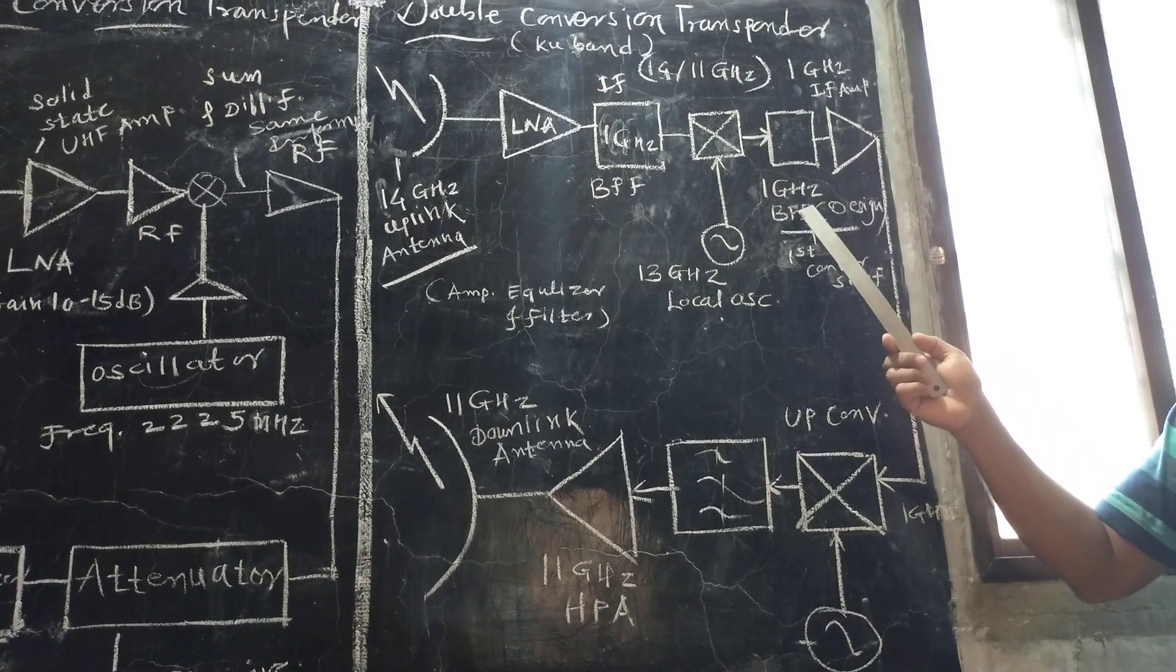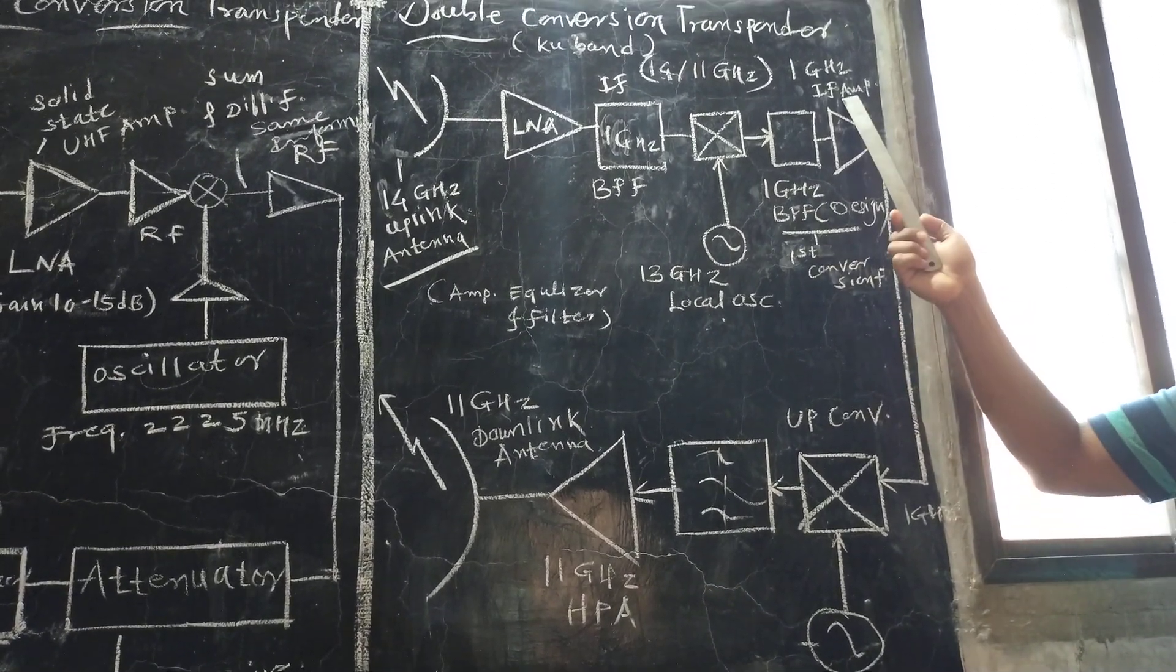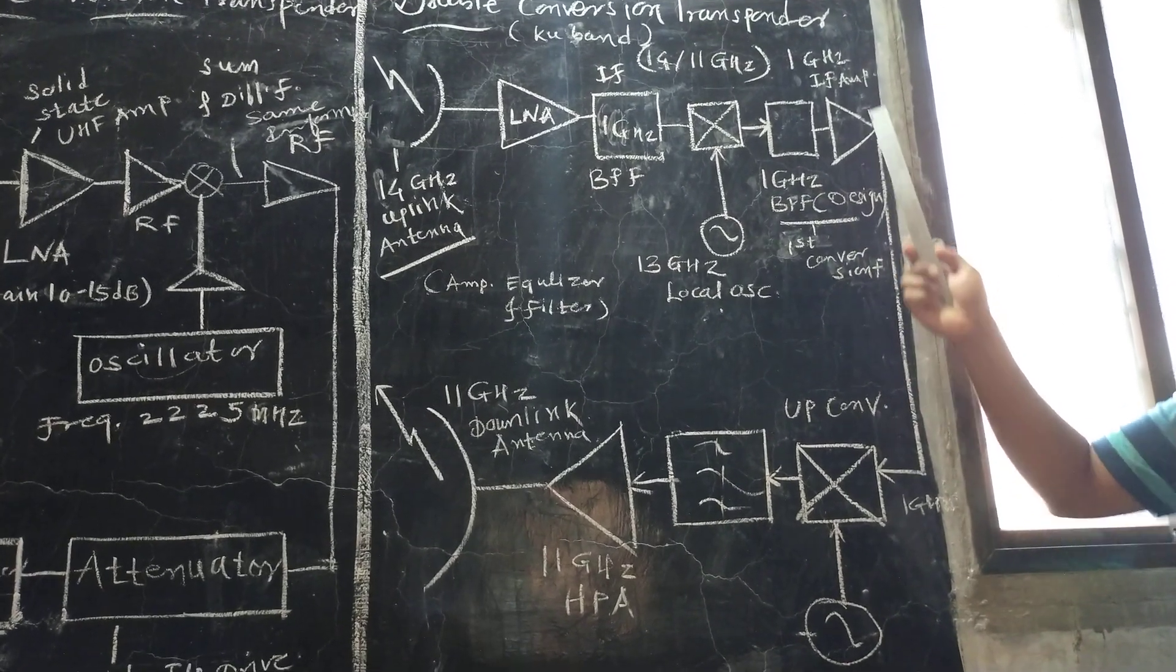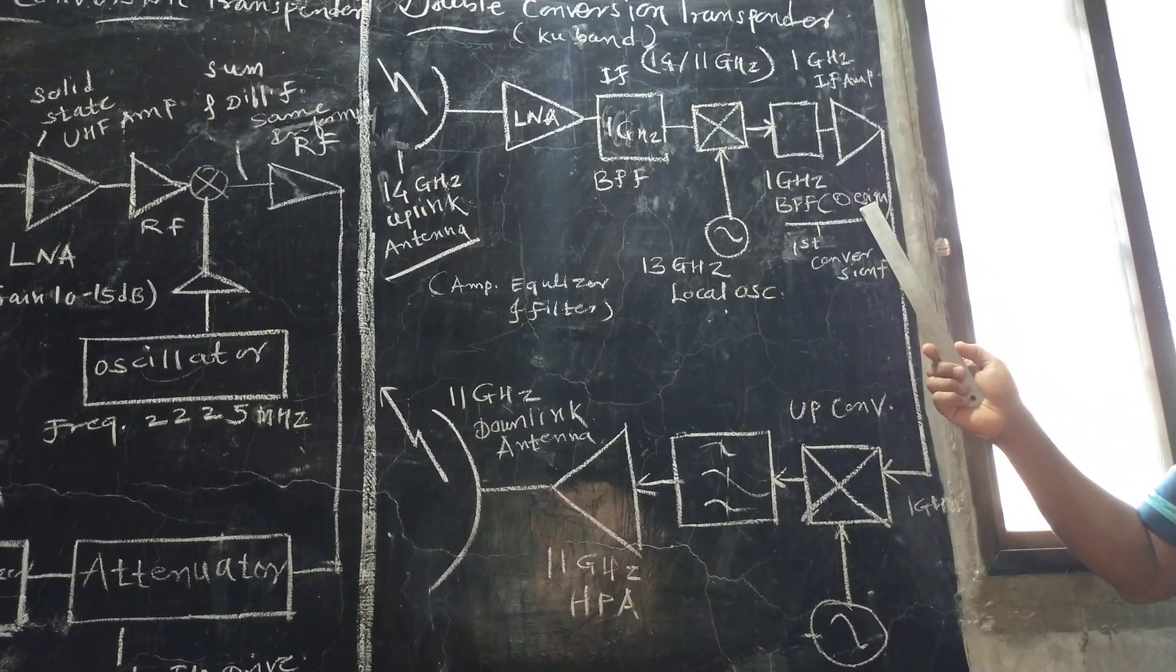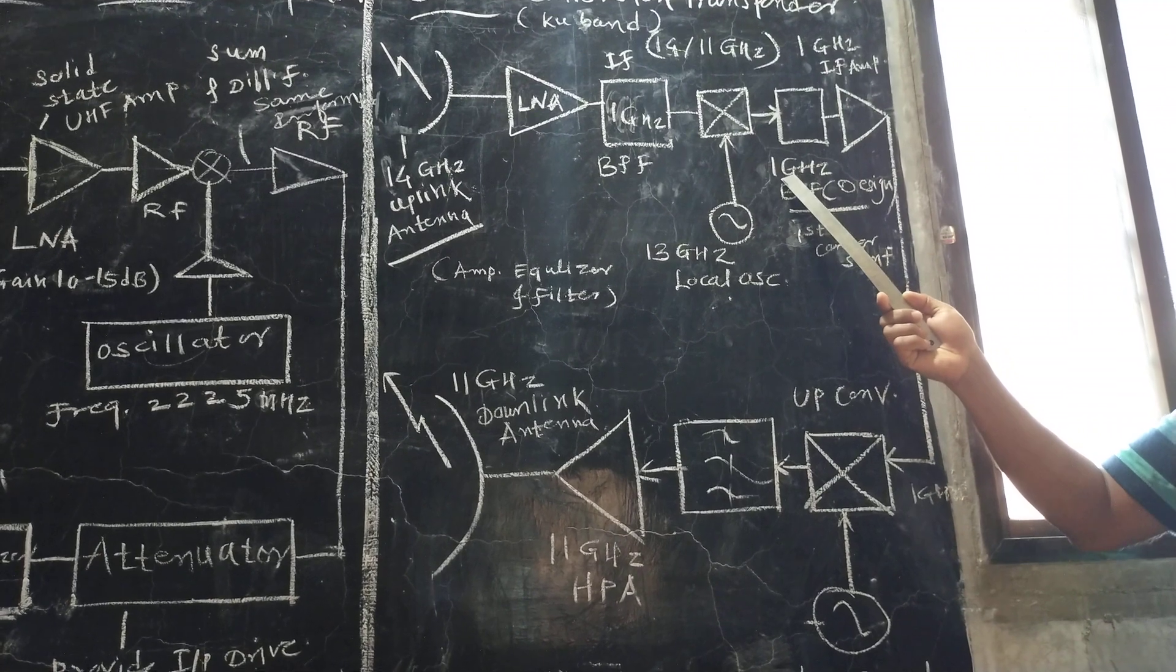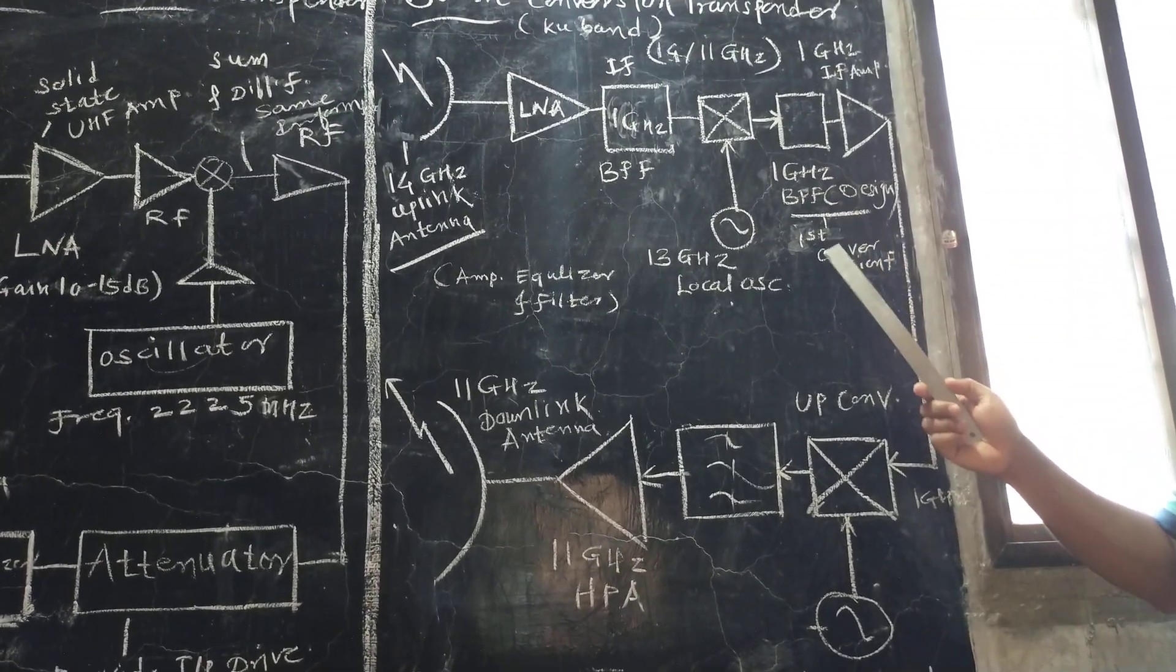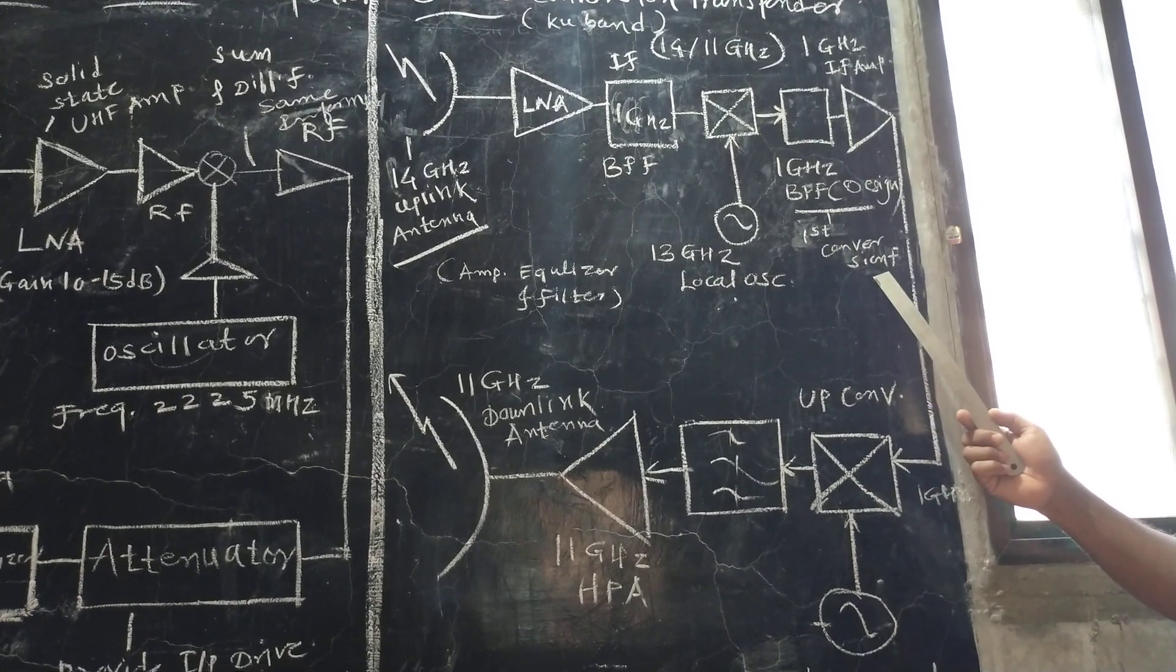The bandpass filter and intermediate frequency amplifier are designed to operate at 1 GHz frequency. This is called the first conversion frequency.